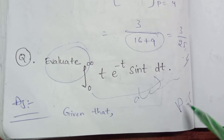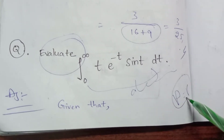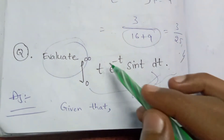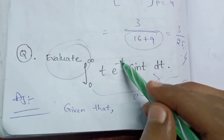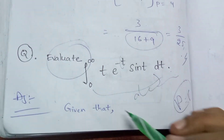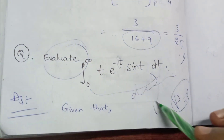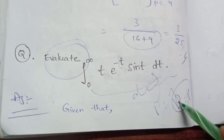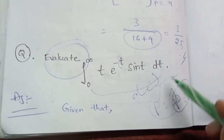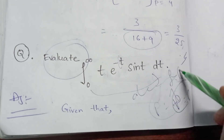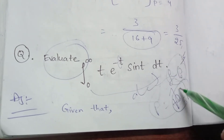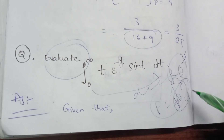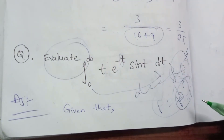We set p equal to 1. Then p is equal to 1. Substitution at f of p with p equal to 1, and substitution at i.